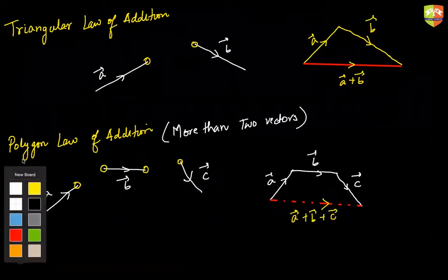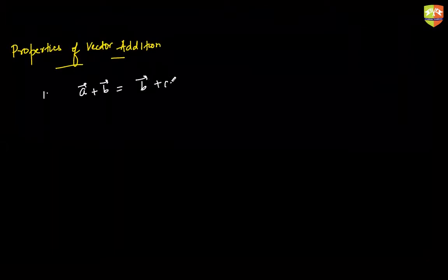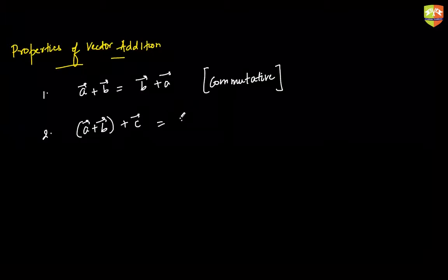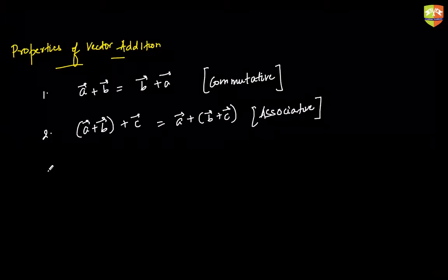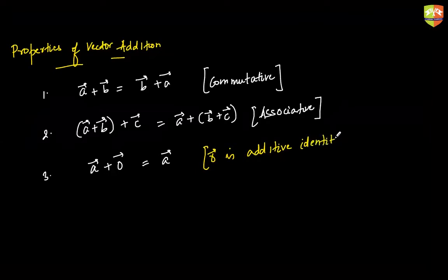There are a few key properties of vector addition. First, it is commutative — A plus B equals B plus A. Second, it is associative — it doesn't matter whether you add A plus B first and then add C, or add A to the resultant of B and C. Third, the zero vector is the additive identity.